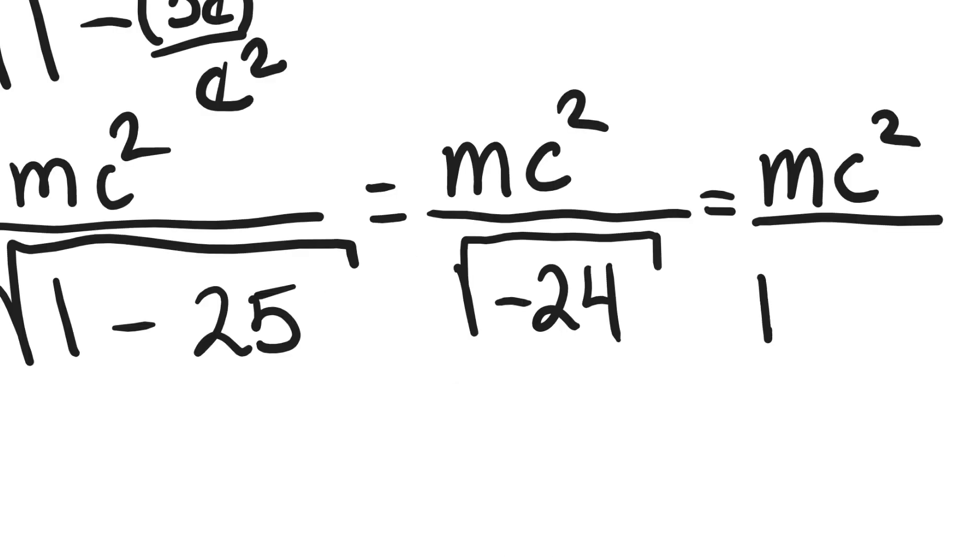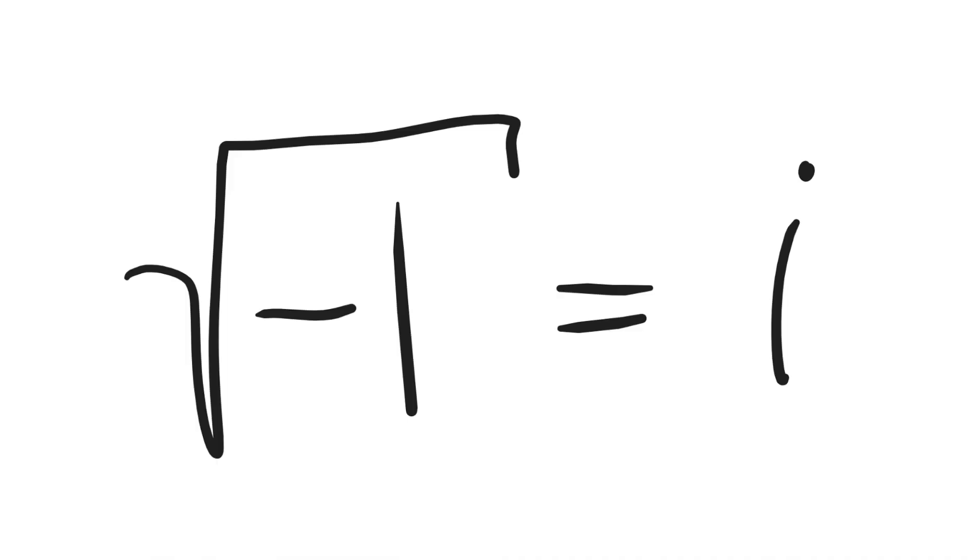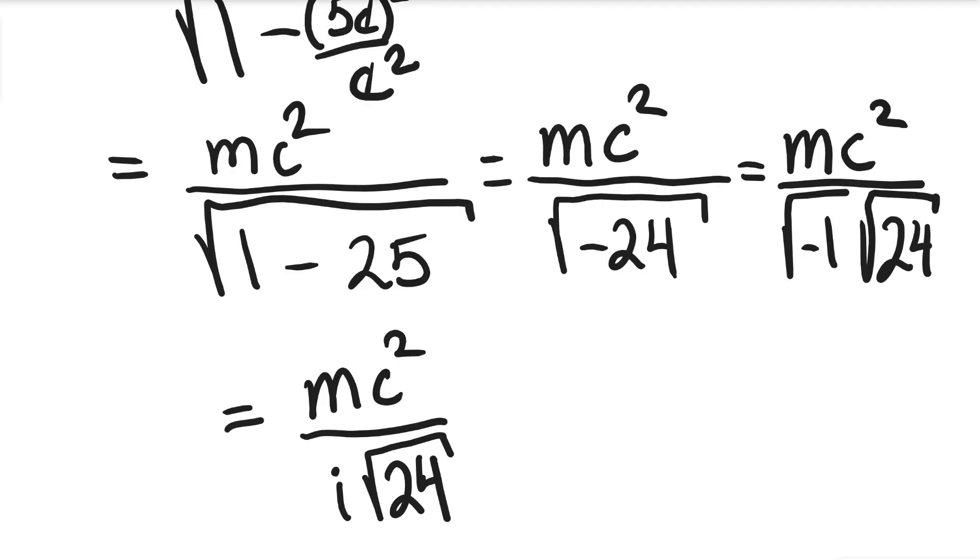We can separate this into mc² divided by the square root of minus 1 multiplied by the square root of 24. If you're new to imaginary numbers, the square root of minus 1 is defined as i. So we get E = mc² divided by √24 times i.